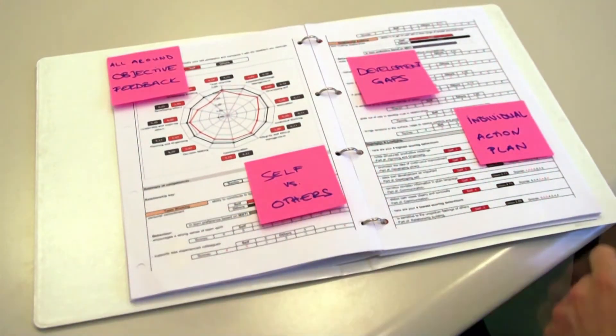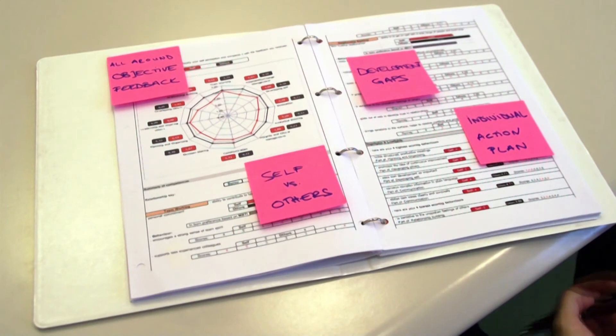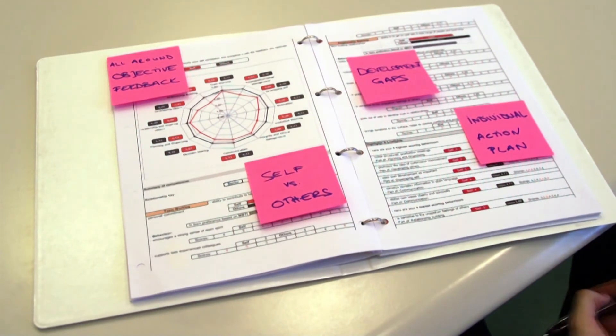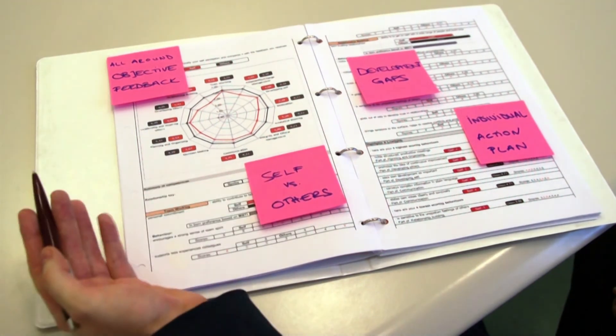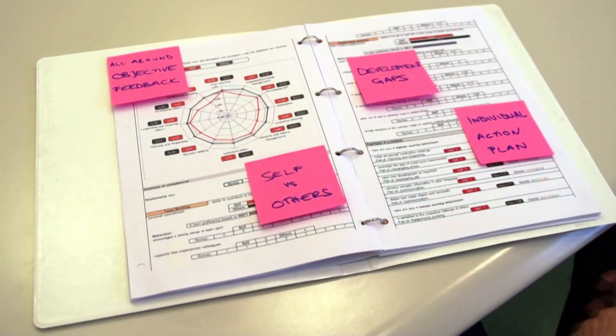The next part of the assessment is built around 360-degree feedback, which is actually the all-around objective feedback, based on self-evaluation on one side and the evaluation of others on the other side. As a result of this evaluation, you will receive and see the concrete development gaps in your case, which will be the foundations for building your individual action plan.